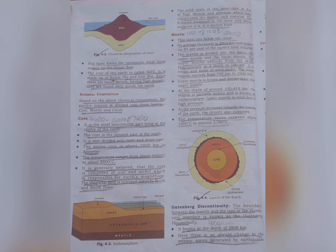Now we come to the mantle. The mantle is a layer that lies below the crust. Its average thickness is 2,900 km and it makes up 84% of the Earth's total volume. The mantle is divided into two parts. The upper mantle extends from the Moho discontinuity to a depth of 700 km; it is cooler and made up of solid rocks. The lower mantle is hotter and denser than the upper mantle. At a depth of around 100 to 410 km, the mantle is partially molten and is known as the asthenosphere.